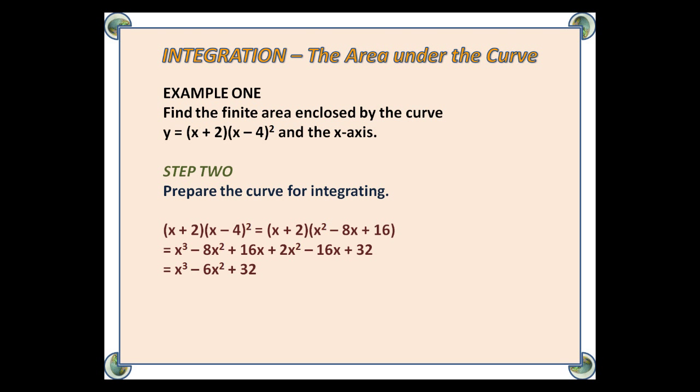Then I've multiplied that by (x + 2). The 16x and -16x will cancel out, and leave us with x³ - 6x² + 32.